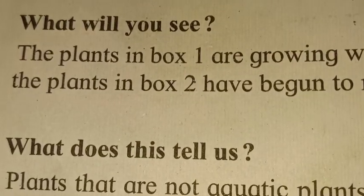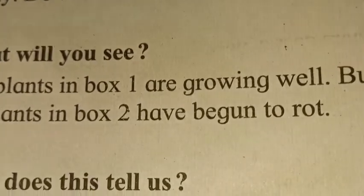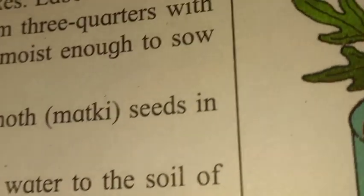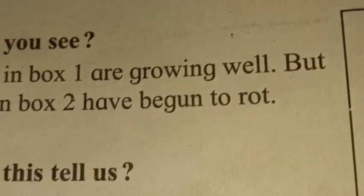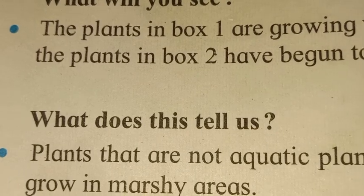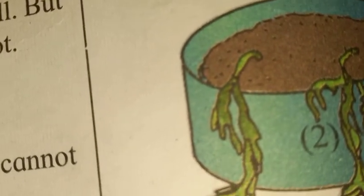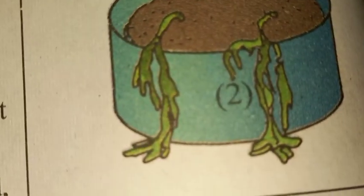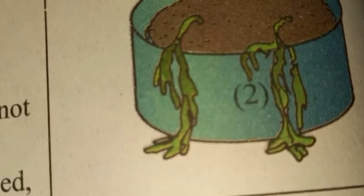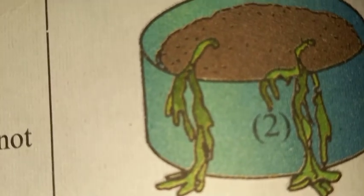What will you see? The plant in Box 1 is growing well — it was getting the right amount of water. But the plant in Box 2 has begun to rot. It is bad. You should not add too much water because it is not an aquatic plant, it is a land plant.